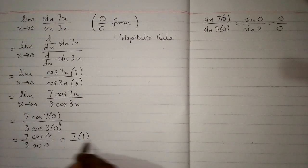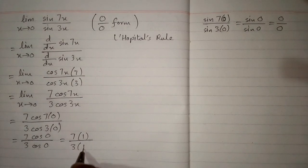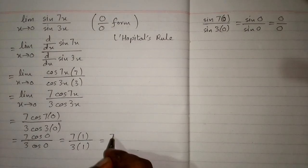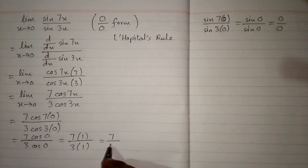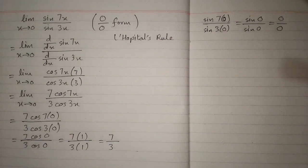Cosine of 0 is 1, 7 times 1 is 7, 3 times 1 is 3, so the answer is 7 upon 3.